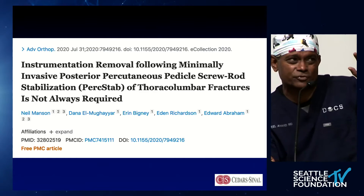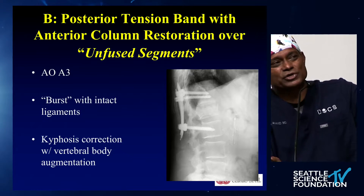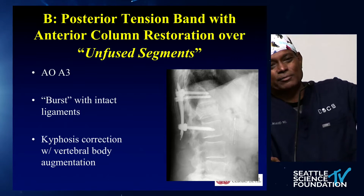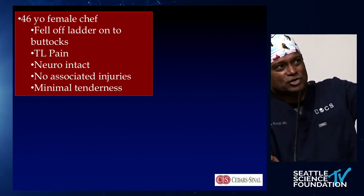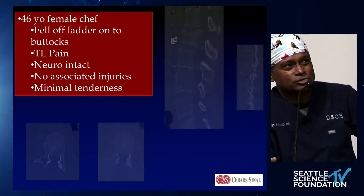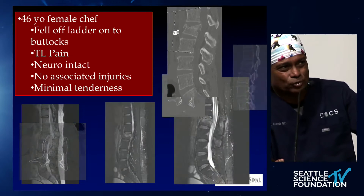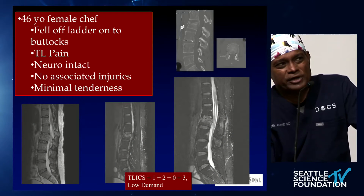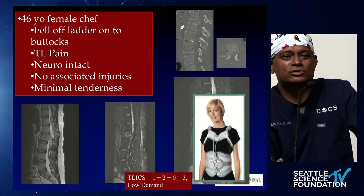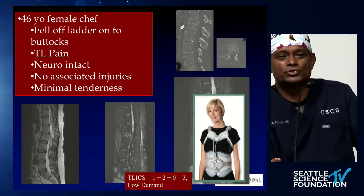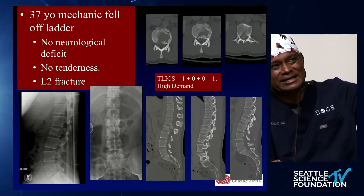So you limit the length of your construct. The other option is a burst fracture — look at burst fractures and see if the ligament is intact or not. If the ligament is intact, many a time you could treat in a brace. Like this patient — a female chef who fell, not much in the way of other injuries, basically a TELICS up to a 3. You could treat in a brace; I'm not arguing that.